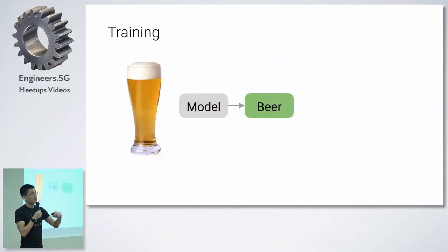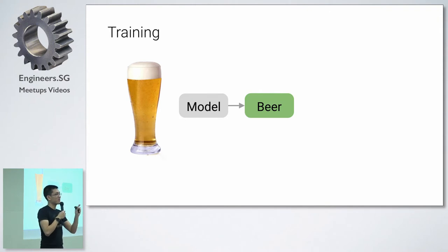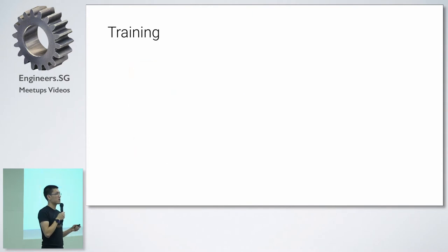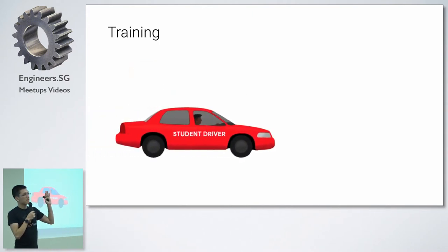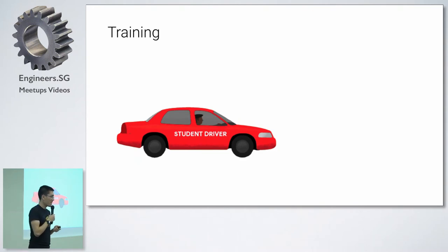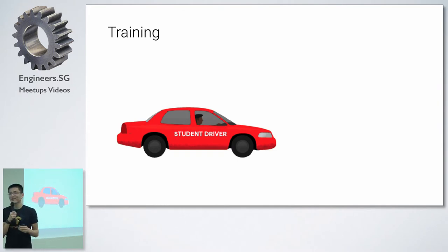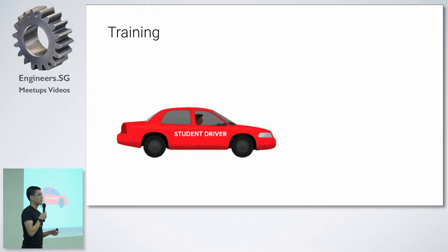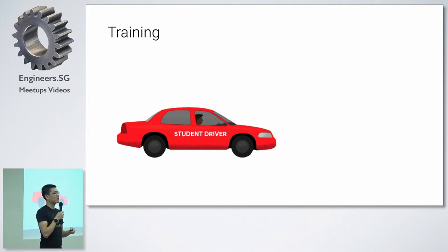That brings us to our training step. The simplest version — for those not familiar — is just a linear model, thinking back to middle school: y equals mx plus b, draw a line of best fit. Another way to think about training is when you're first learning to drive. In the US, when you first become eligible to drive — most states it's when you're 16, some 16 and a half, some 17 — you get a permit license and you're able to drive with an adult supervising you. You're a student driver.